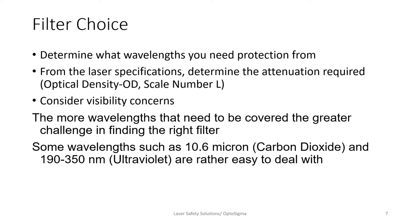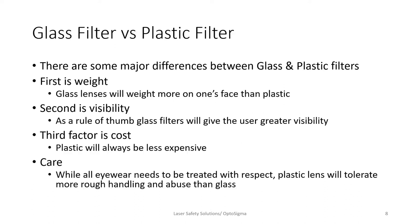Some wavelengths, such as 10.6 micron CO2 laser and UV at 190 to 350 nanometers, make it relatively easy to find eyewear with great visibility and protection. There is always the question of glass filter versus plastic filter, and there are major differences. Glass lenses are heavier and the question becomes whether that will be comfortable for a full day. As a rule of thumb, glass filters usually give a greater level of visibility. Plastic will always be less expensive, and plastic lenses tolerate more abuse than glass lenses, primarily because most glass lenses have a coating you don't want to damage.